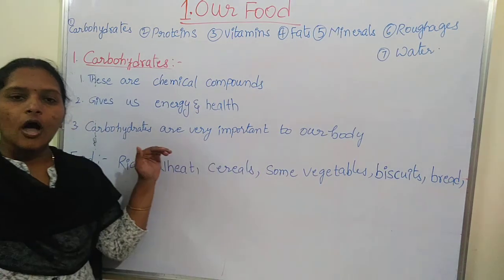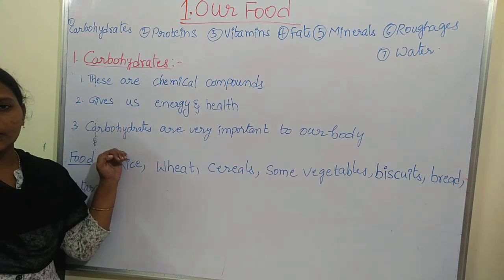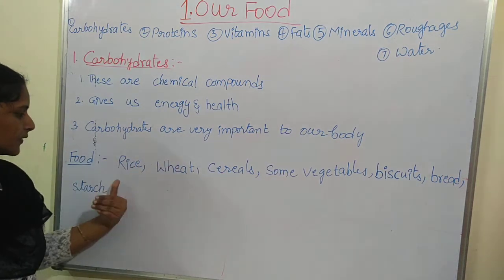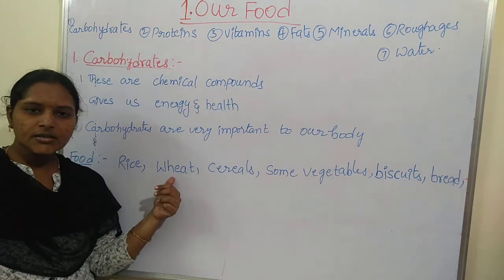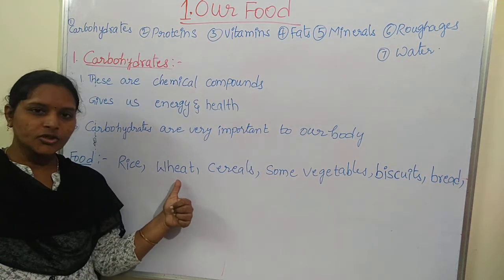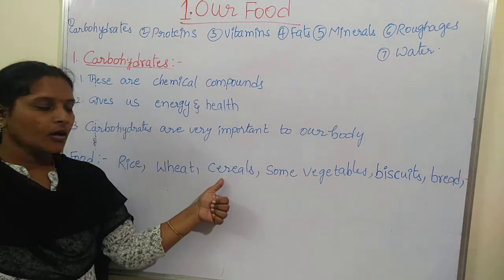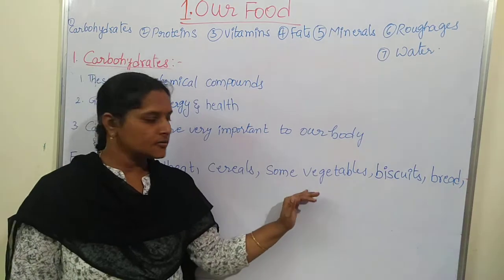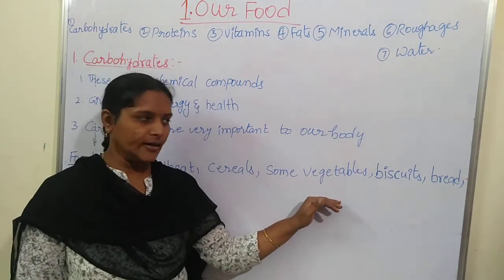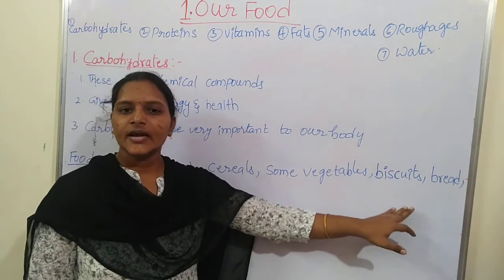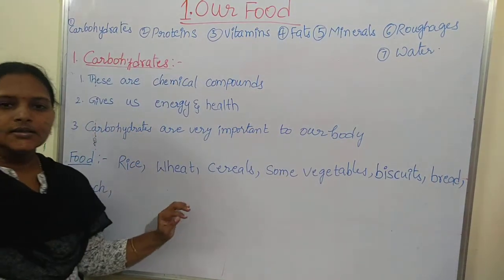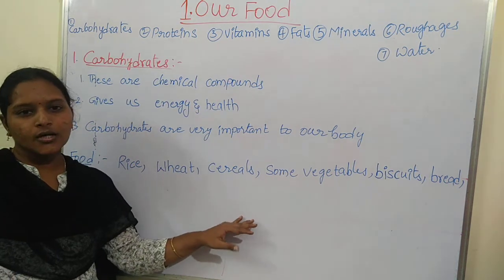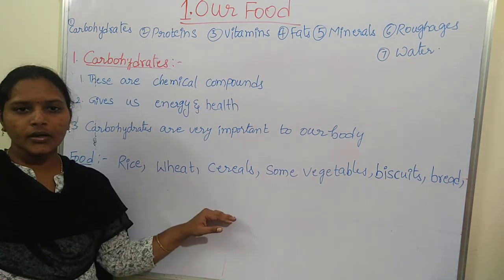How do we get carbohydrates from food? We get carbohydrates from rice, rice items, wheat — meaning chapatis — and cereals. If you eat cereals you get carbohydrates instantly. Some vegetables also contain carbohydrates. Biscuits, bread, and starch — all these food items contain carbohydrates. This is about carbohydrates.